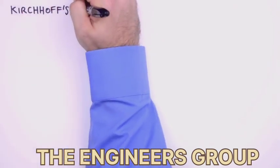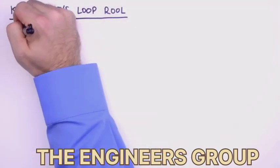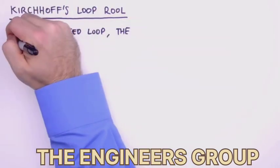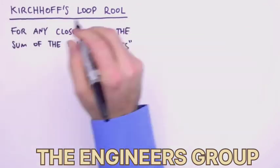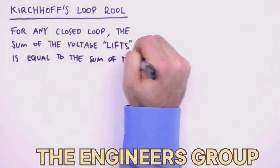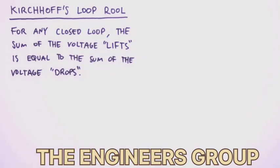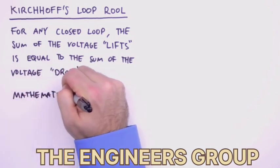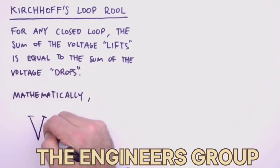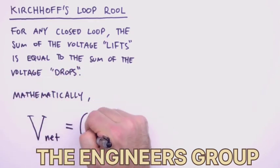Now let's examine Kirchhoff's other rule, the loop rule. The loop rule states that for any closed loop, the sum of the voltage lifts is equal to the sum of the voltage drops. We'll define a closed loop as any continuous path in the circuit which ends where it started. The loop rule stated mathematically is the net voltage for a closed loop equals zero.